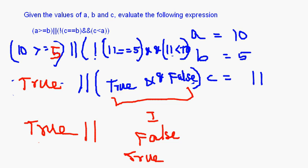Let's go through this once more. 10 >= 5 is true. OR NOT (11 == 5): 11 == 5 is false, NOT false is true. AND 11 < 10 is false. Now there are two operators: OR and AND. Logical AND has higher priority, so true AND false is false, and then true OR false gives the final answer: true.